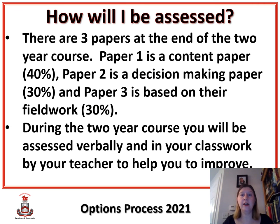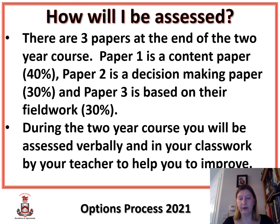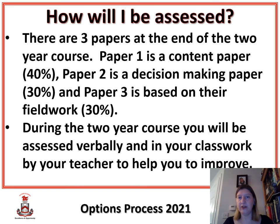How will you be assessed? Our three themes are what you need to revise for Paper 1, which is a traditional content-style paper — you revise, and you get a question on theme one, a question on theme two, and a question on theme three. Paper 2 is a decision-making paper where you are given information in the form of photographs, graphs, and things to read. You look at the problem, make a decision on how to solve it, write up your decision, and justify it.